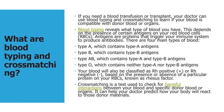Blood type reveals what type of blood you have. This depends on the presence of certain antigens on your blood cells. Antigens are proteins that trigger your immune system to produce antibodies. There are four types of blood.